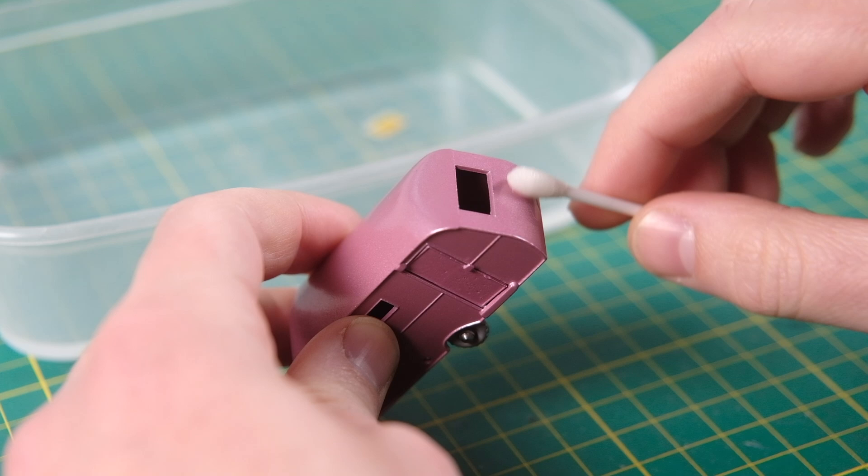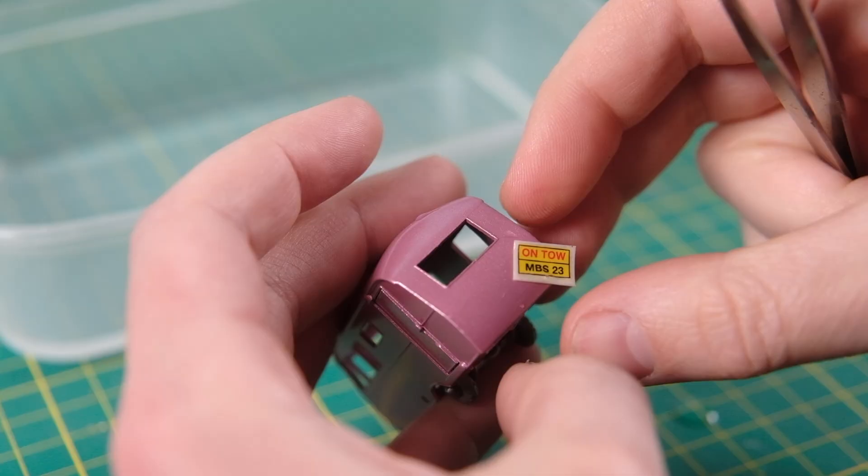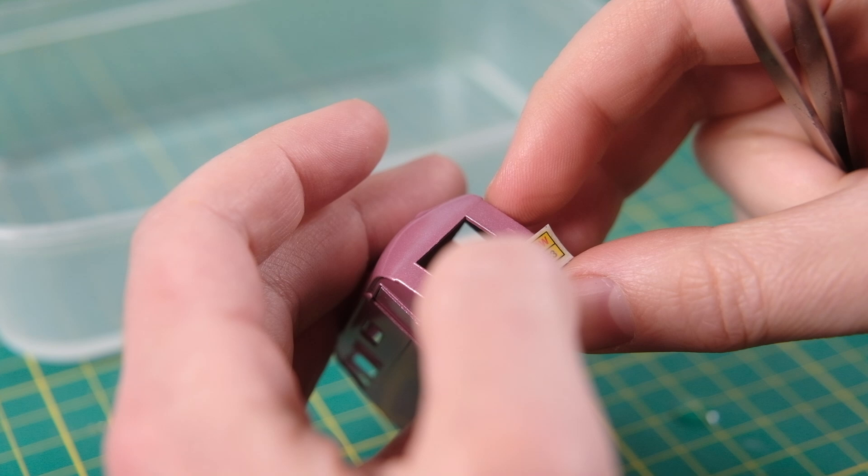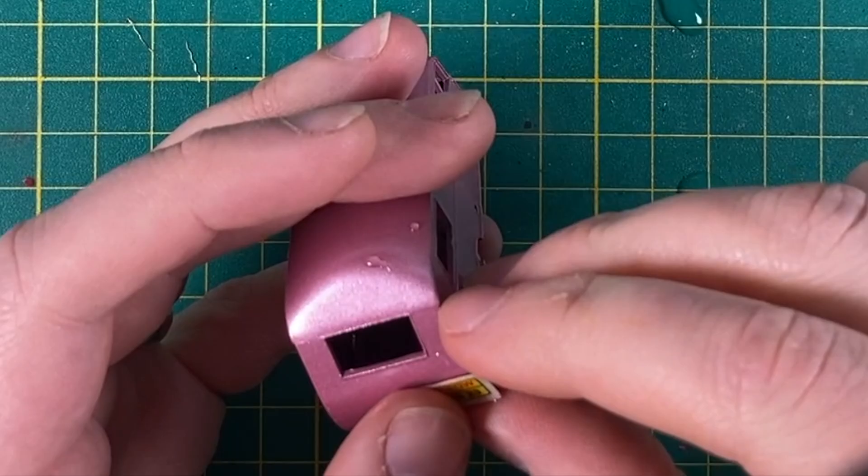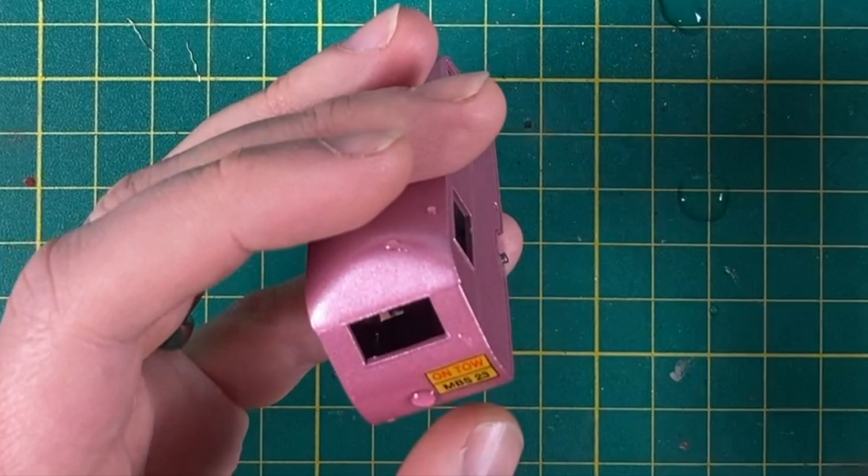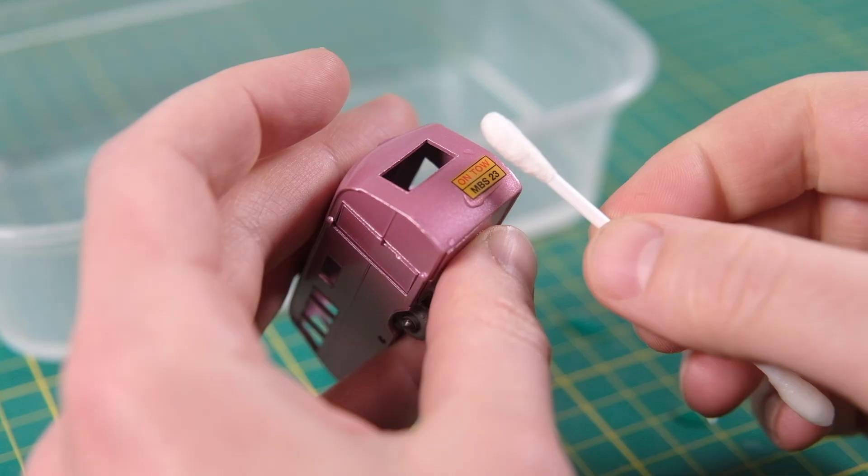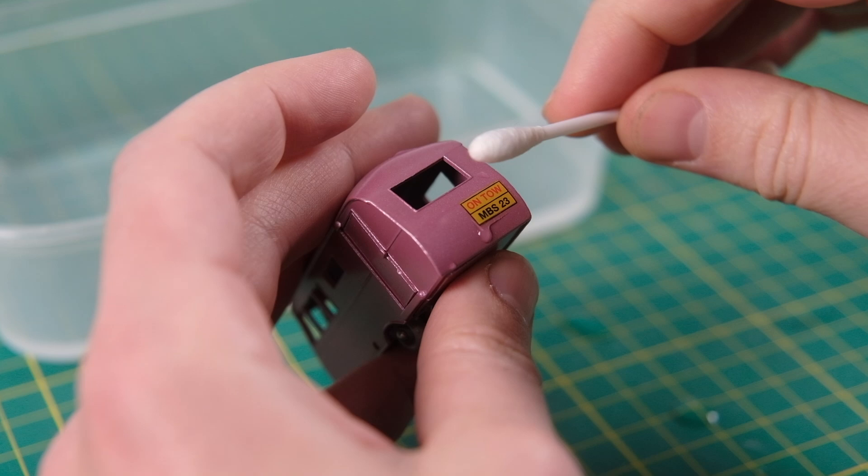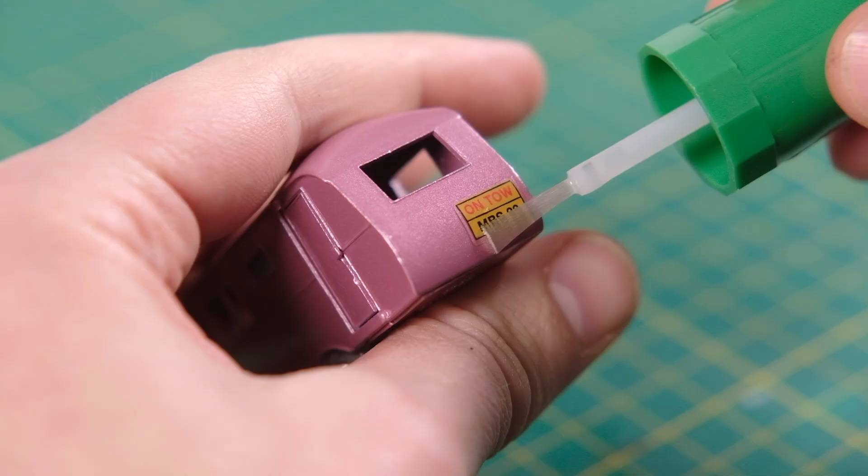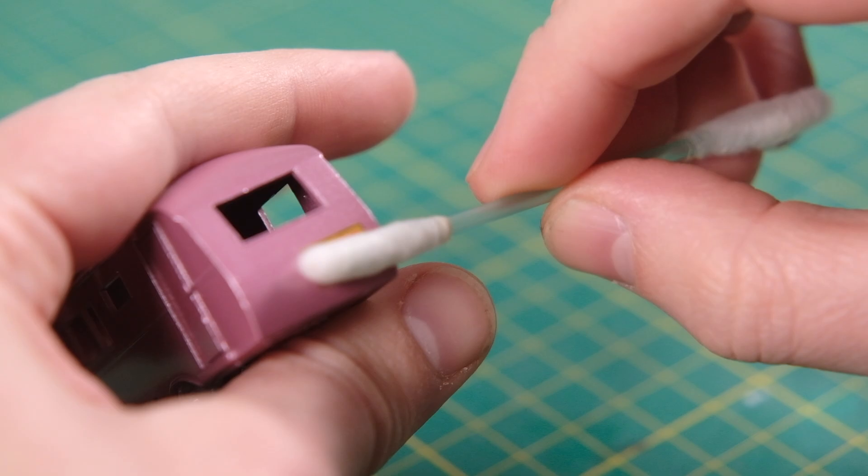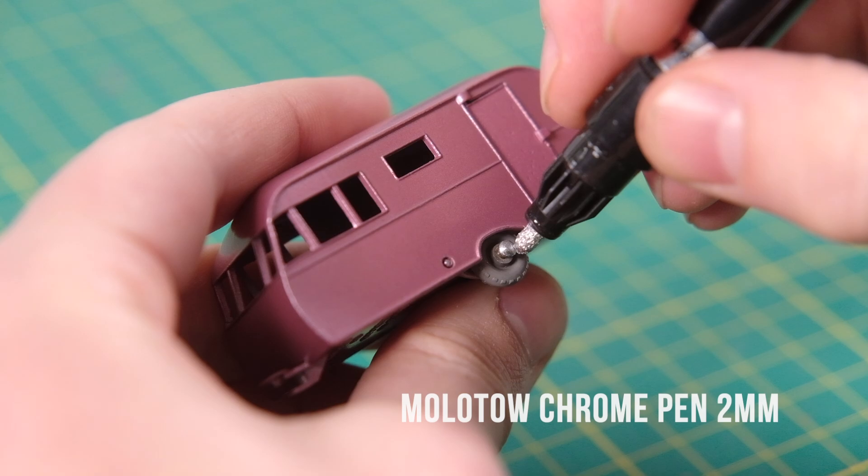Next I begin prep to apply the reproduction on tow decal. As always I'll leave a link to the source of the reproduction parts and decals in the description below. This particular decal has a really strong yellow background color and the lines and lettering are exceptionally crisp. It was still a bit damp applying the Mr Mark softer hence why it moved a bit there.